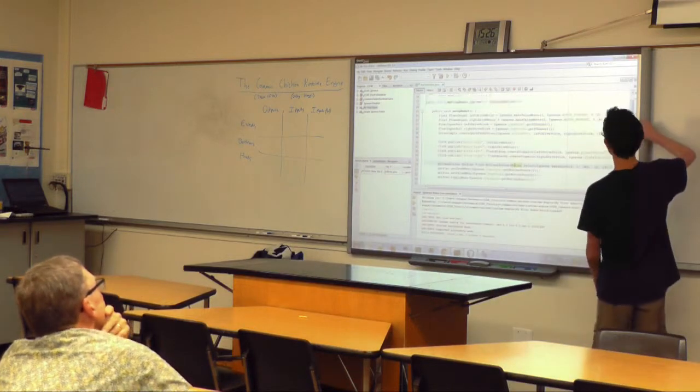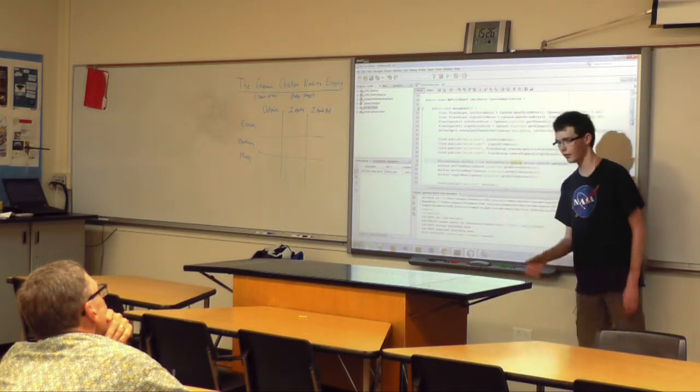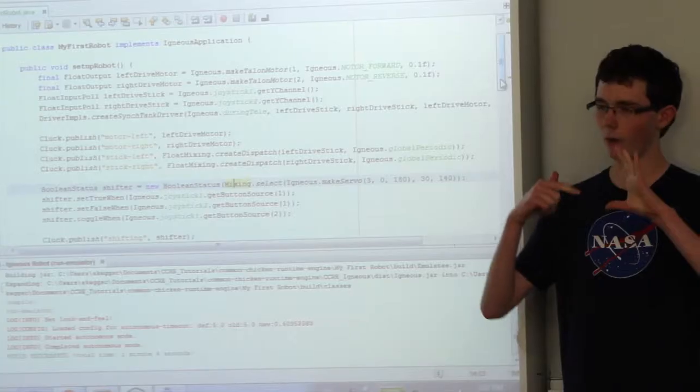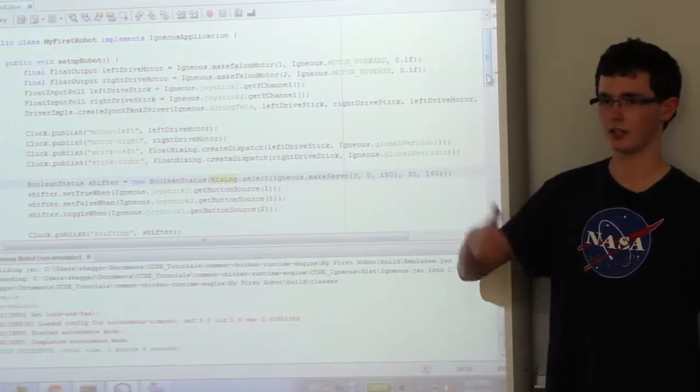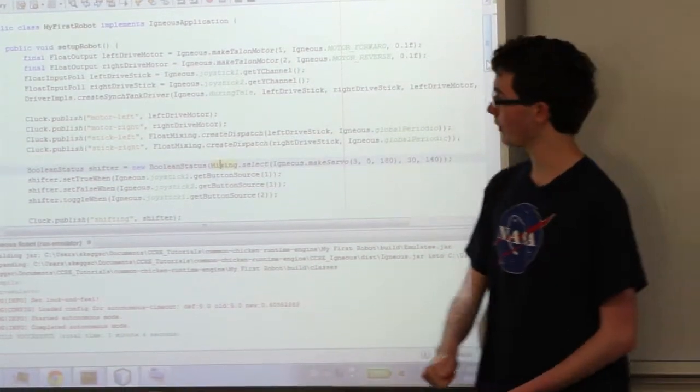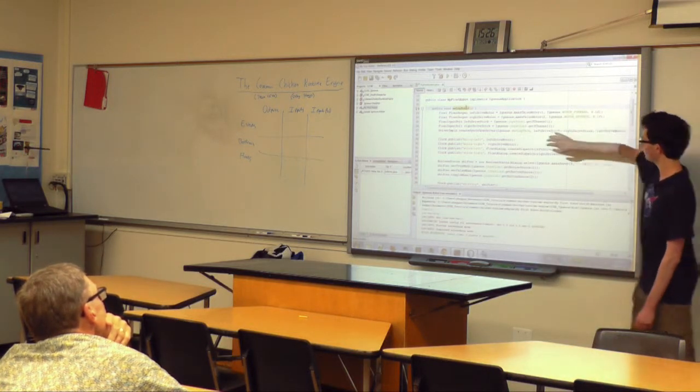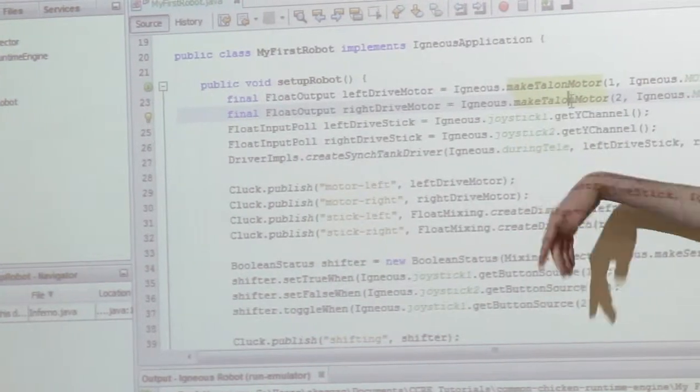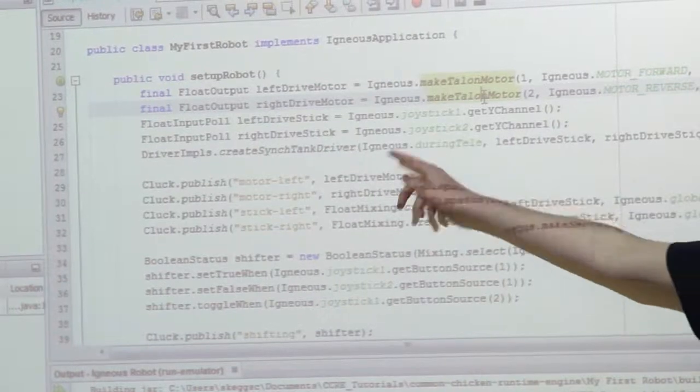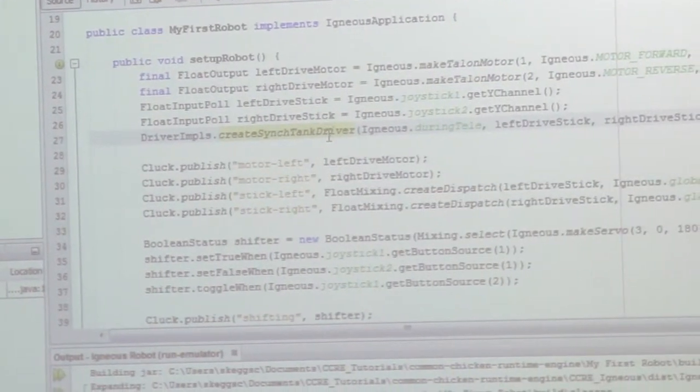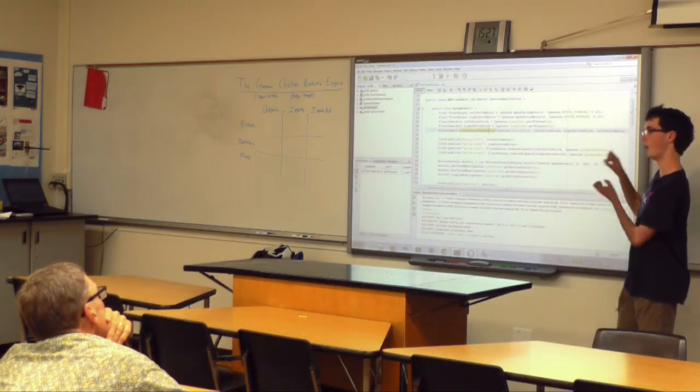One of the major changes from normal FRC programming is instead of writing your main code as one big loop where every code runs every cycle, every 20 milliseconds, what the CCRE does is you write code where most of it just runs once. This code runs when the robot starts. It creates some motors and works with joysticks and driving.